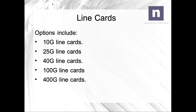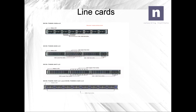Let's talk about line cards. Arista chassis switches usually come with 10GB and 25GB line cards; you can also order 40GB, 100GB, or even 400GB line cards. The first example shown is a 40GB line card with 32 QSFP 40GB interfaces, which can be broken out to 128 10GB interfaces with the right breakout cable. The second line card is a 10GB line card with 64 10GB SFP interfaces and 4 QSFP 40GB uplink interfaces.